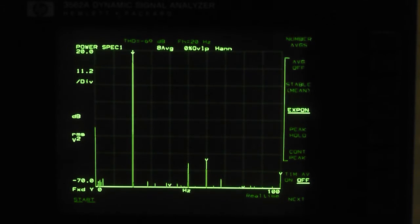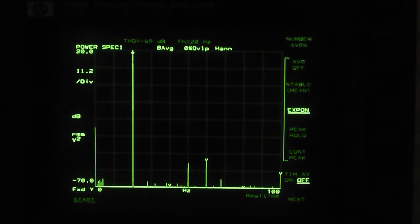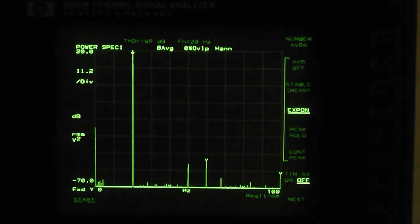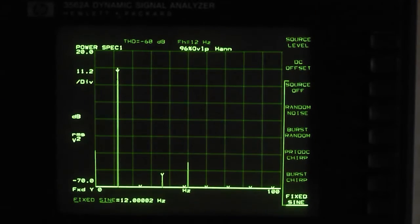So my idea is to adjust the trim pot for the positive feedback, which is R35, I believe, and try and minimize that distortion. But at the moment, I'm almost too frightened to touch it.